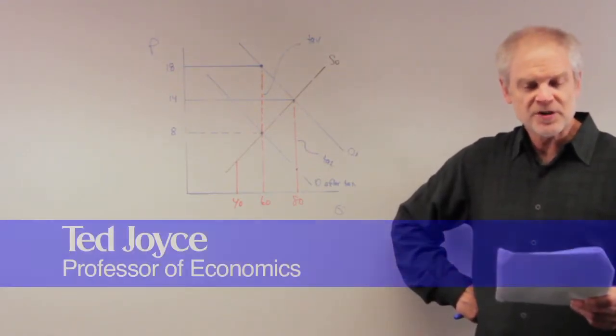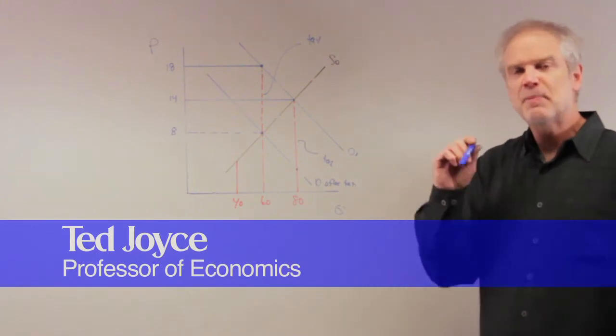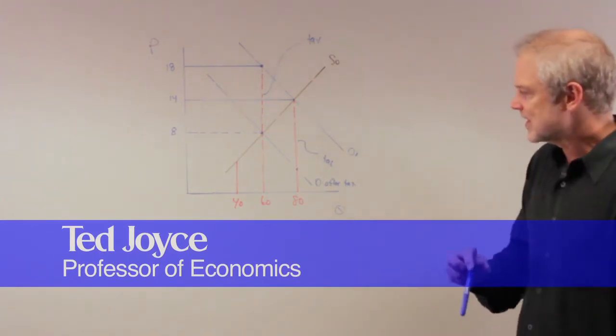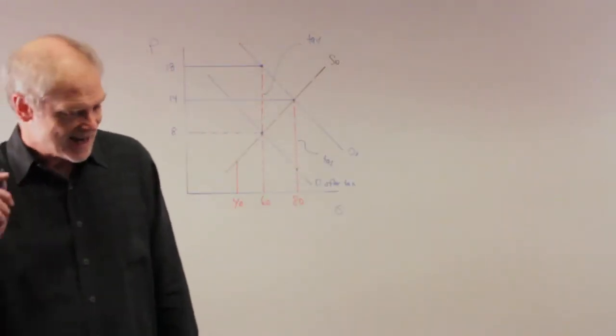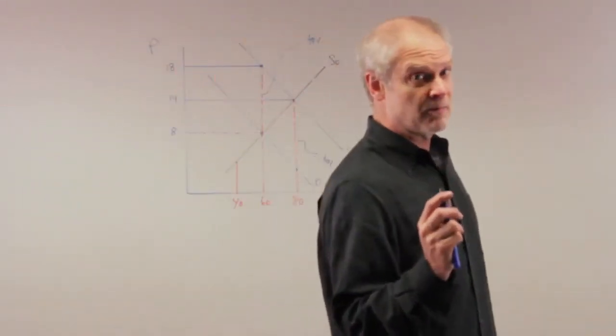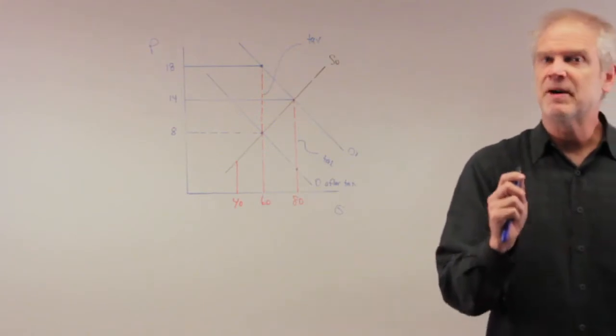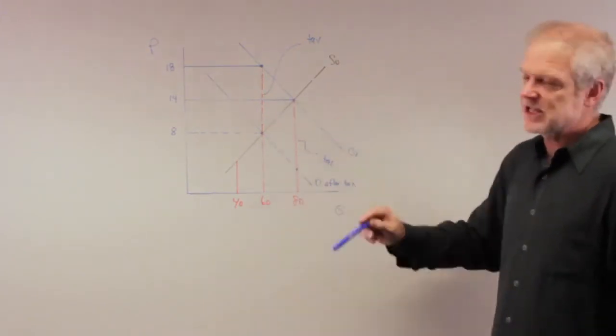The per-unit burden of the tax is the per-unit burden. In other words, how much of this tax is going to be borne by consumers, and how much of this tax is going to be borne by suppliers. That's what we mean by the burden of the tax. Who pays what proportion?